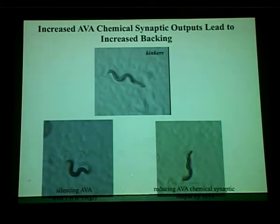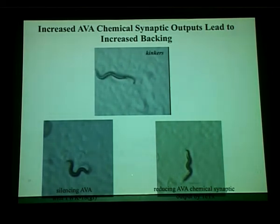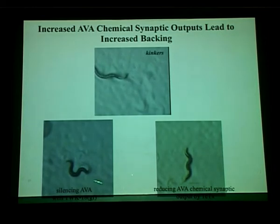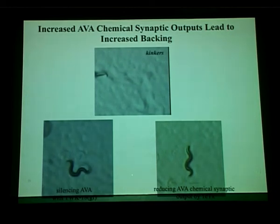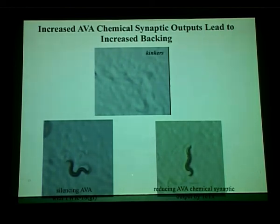If increased chemical synaptic output from AVA drives the kinker backing phenotype, we should be able to block this by silencing AVA's chemical synaptic activity in kinker mutants. We did this two ways: silencing AVA's electrical activity using the potassium channel TWK-18, or expressing tetanus toxin specifically in AVA to prevent SNARE complex formation and synaptic vesicle release. In both cases, these animals are still kinking but can no longer increase backward locomotion like the kinker mutant does.